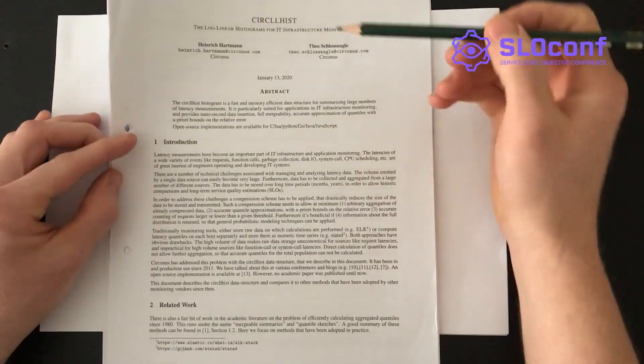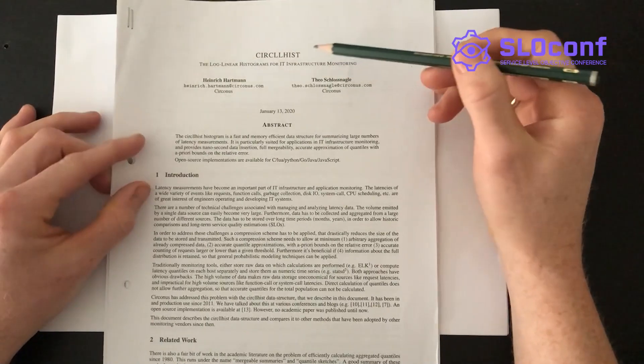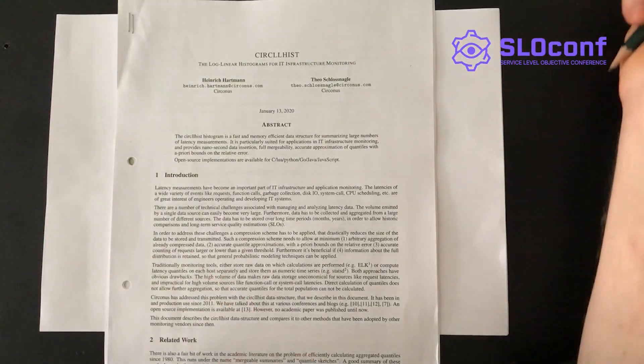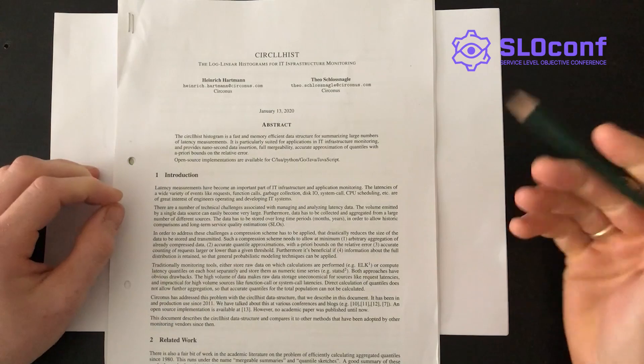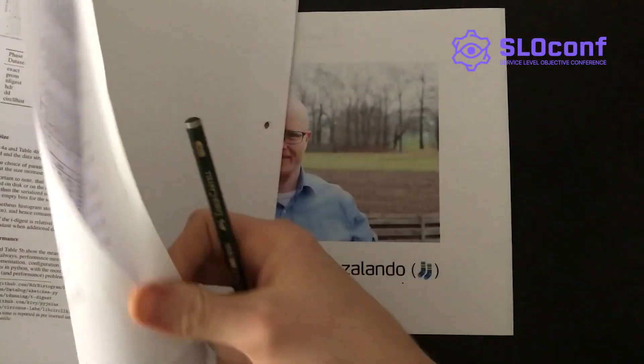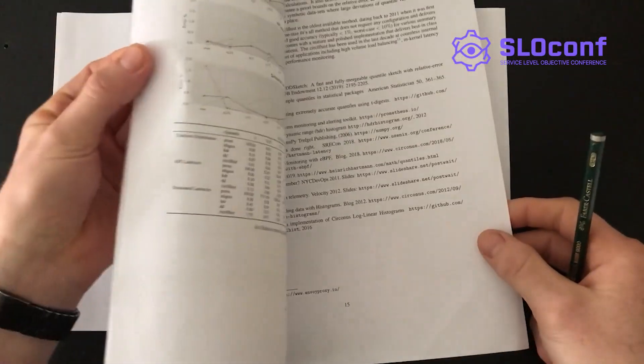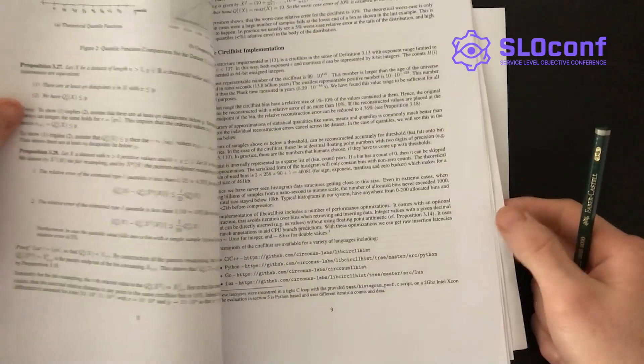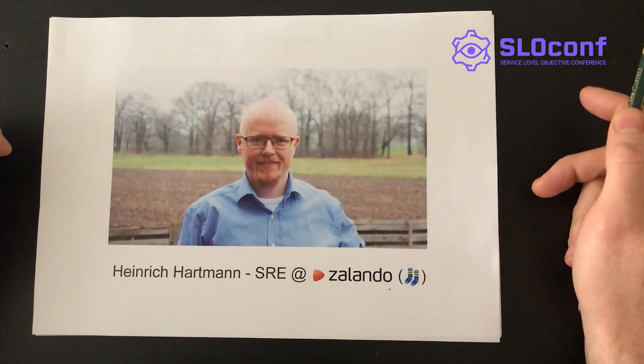As part of my work there, I co-authored a paper together with Theo Schlossnagel called the CircleHist. The CircleHist is a histogram data structure for IT operations applications. In the paper, we look at a variety of other histogram implementations that are available and benchmark them against each other to see how they perform and what their size characteristics are. The idea of this talk is to give you an overview of the related work in the histogram space and share some of the evaluation results.